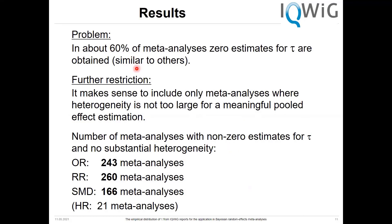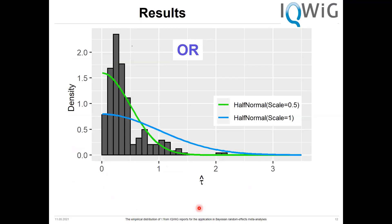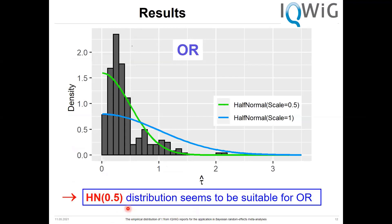We have meta-analyses from 653 IQWIG reports — over 1,600 meta-analyses in total across four effect measures. In about 60% of all situations we get a zero estimate for tau. After applying the two restrictions, here are the results for the odds ratio. At first sight, the half-normal distribution with scale parameter 0.5 seems to be suitable for the odds ratio, as there are very few cases in the fairly extreme range.